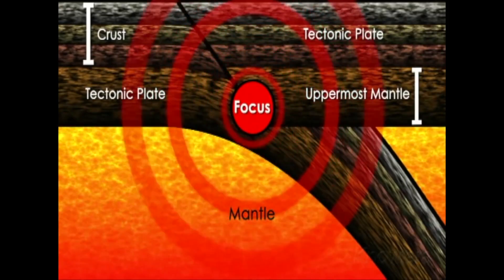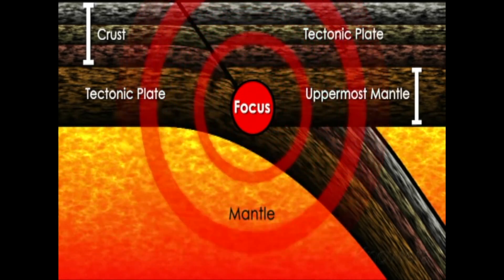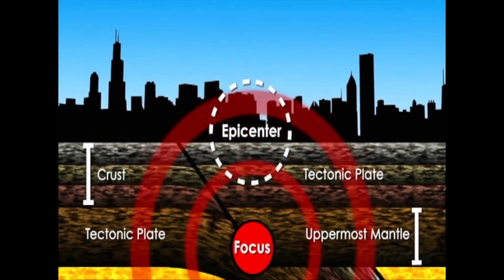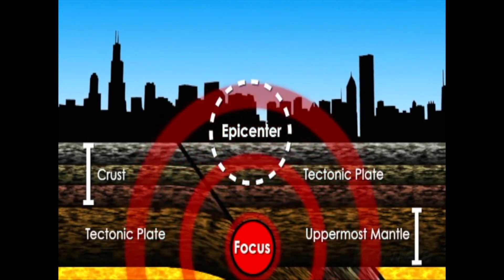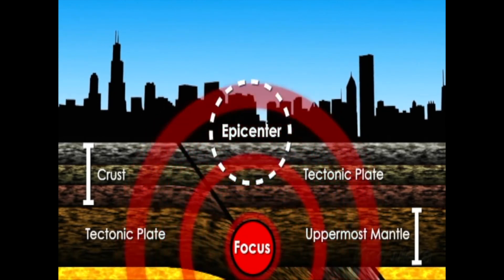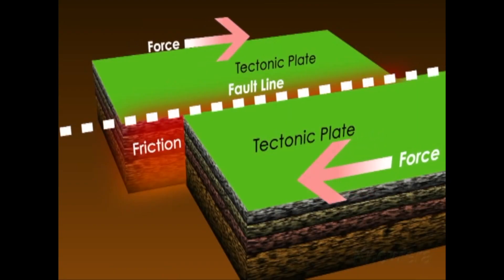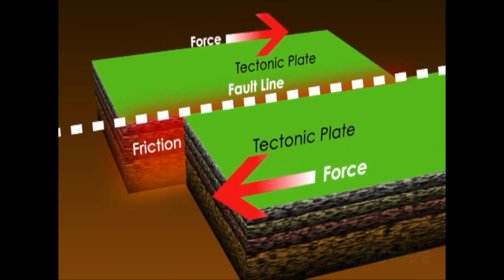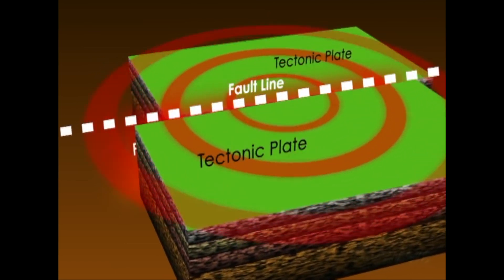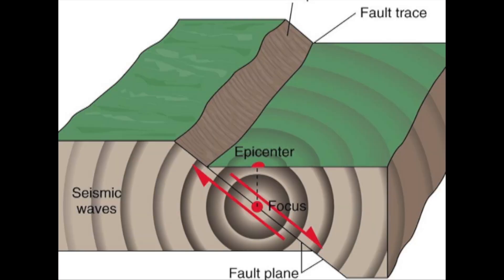An earthquake is the result of a natural process of sudden release of energy in the Earth's crust that creates seismic waves. At the Earth's surface, earthquakes manifest themselves by vibration, shaking, and sometimes displacement of the ground. Earthquakes are caused by slippage within geological faults. The underground point of origin of the earthquake is called the seismic focus, and the point directly above the focus on the surface is called the epicenter.